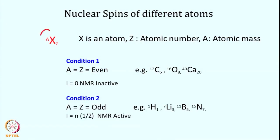What kind of nuclei give a signal? Consider an atom X with atomic number Z and atomic mass A. If both A and Z are even — for example carbon-12, oxygen-16, calcium — these nuclei have spin quantum number zero and are therefore NMR inactive; there is no signal from such nuclei.